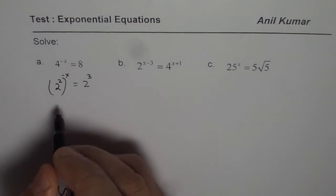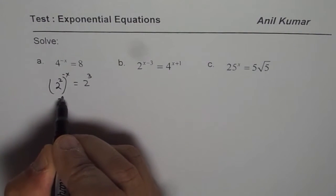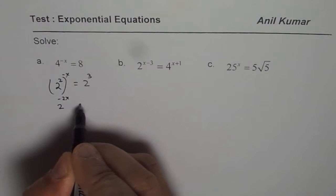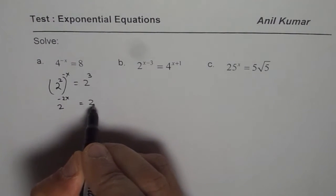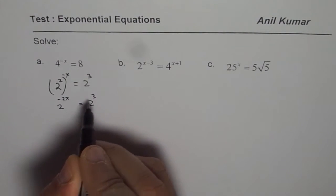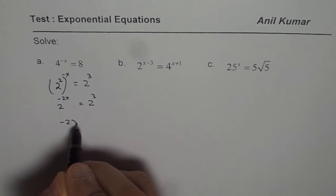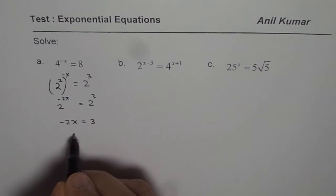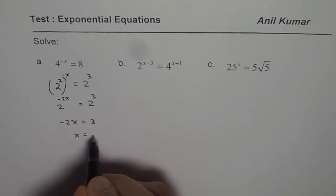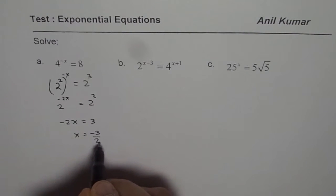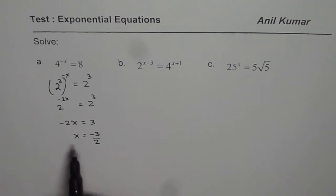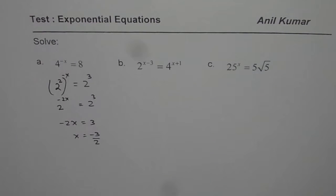So here we get 2 to the power of minus 2x equals to 2 to the power of 3, and then we can write minus 2x equals to 3, or x equals to minus 3 over 2. So x equals to minus 3 over 2 is our solution for the first equation.